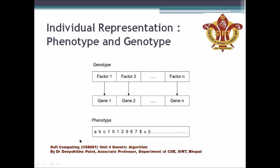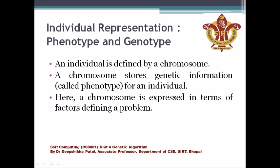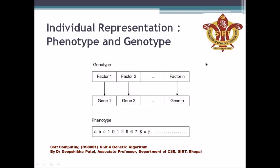This space in our problem is the problem space. The genotype refers to the factors that define the problem. Suppose there are n factors — each factor is called a gene. The set of genes are the important factors we consider for solving a particular problem. We then convert these factors into a phenotype, because our problem space is very different from the real-world space. We convert these genes into the phenotype — that means we convert them into our problem space — using a method known as encoding.